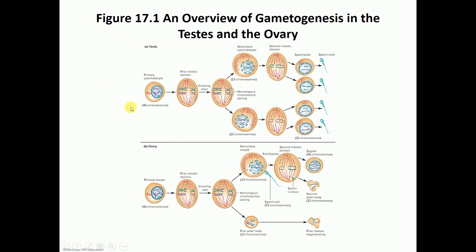The primary spermatocyte starts the first meiotic division where we end up making two secondary spermatocytes. Each one has 23 chromosomes but still has two chromatids, so they still have that X shape of a chromosome. We then split each chromosome into two chromatids in the second meiotic division, ending up with four spermatids. These four spermatids mature into sperm cells through a process known as spermiogenesis.